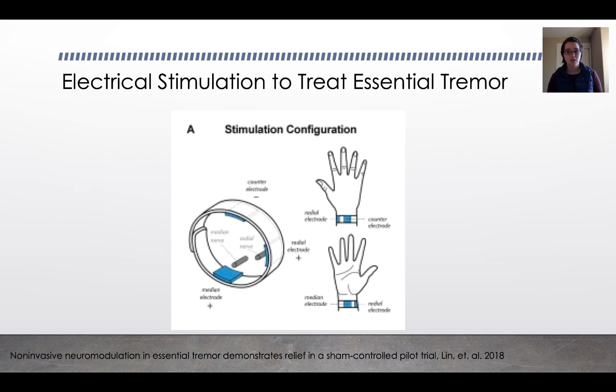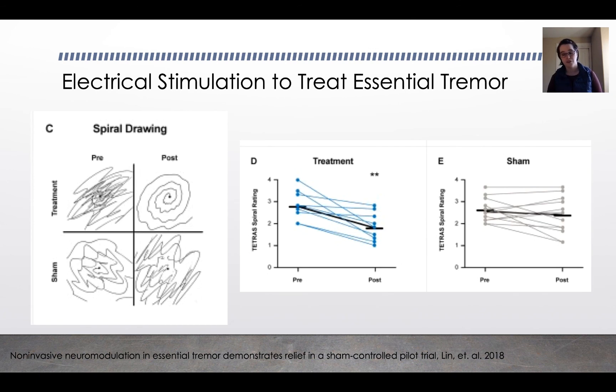So an interesting recent study used electrical stimulation to treat essential tremor. They put a bracelet on the wrist of the subject with an electrode. They had a sham group and a stimulated group, so subjects were blinded. They did the spiral drawing test both pre and post. You can see here the treatment group, both on the left with the pictures of the drawings and then the pre-post scores for the different subjects. The treatment group definitely increased in their ability to draw a clean spiral, so a decreasing score on the spiral rating as a result of the treatment. So there's some really cool things that you can do with electrical stimulation because of the way the muscles work.